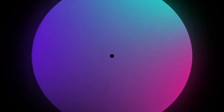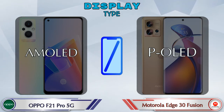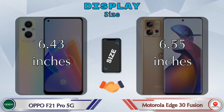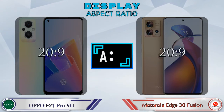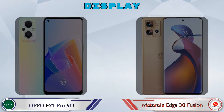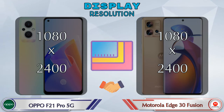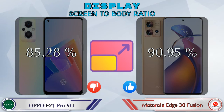Talking about display type, the F21 Pro 5G has an AMOLED display and the 30 Fusion 5G has a P-OLED display. Display size: the F21 Pro 5G has 6.43 inches and the 30 Fusion 5G has 6.45 inches. Aspect ratio is the same in both phones at 20:9, and both have the same 1080 by 2400 resolution. Screen-to-body ratio: the F21 Pro 5G is 85.28% while the 30 Fusion 5G is 90.95%.